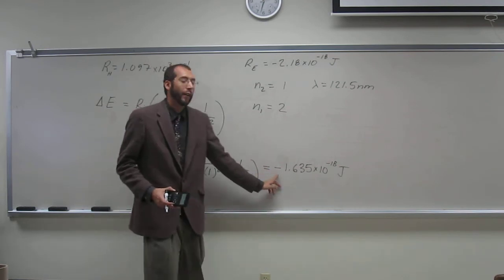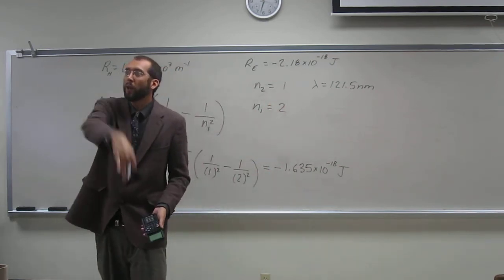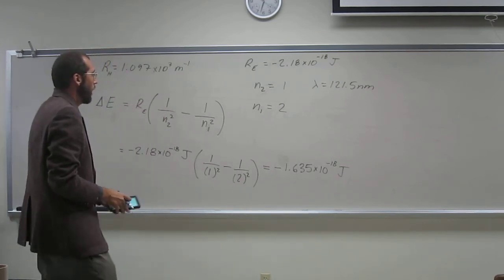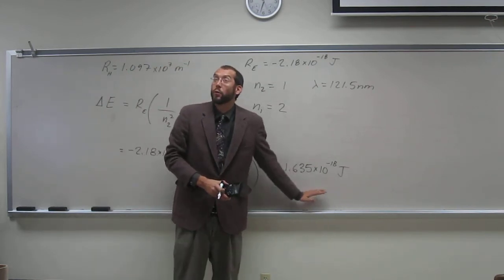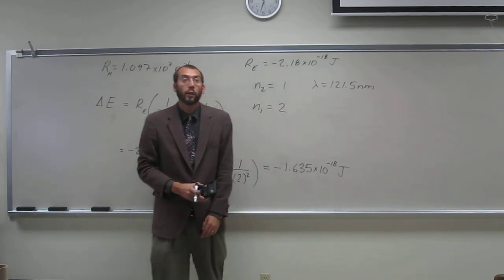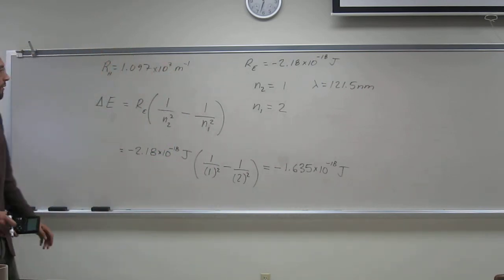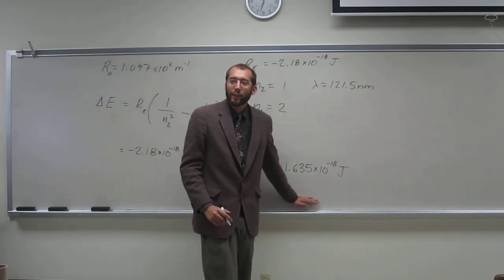Notice the negative here. That says that it's releasing energy. Because when you're falling down energy levels, energy is being released. So this makes it more stable when you release energy, if you want to think about it that way. This is the first time we'll be talking about that. But again, this is per one electron.